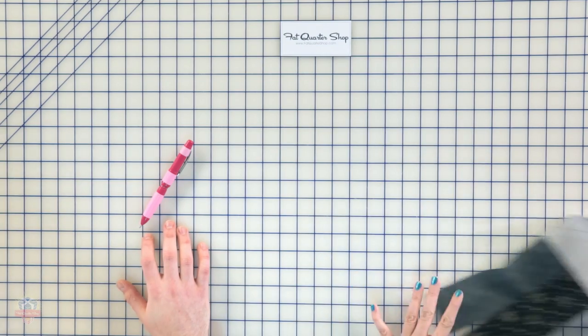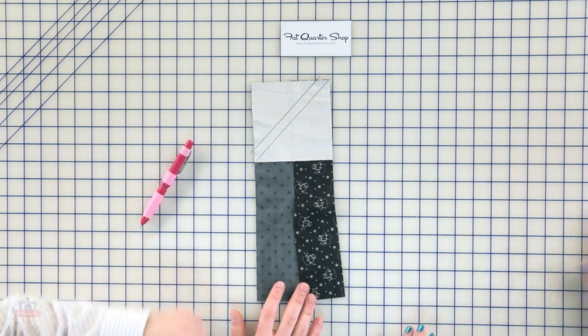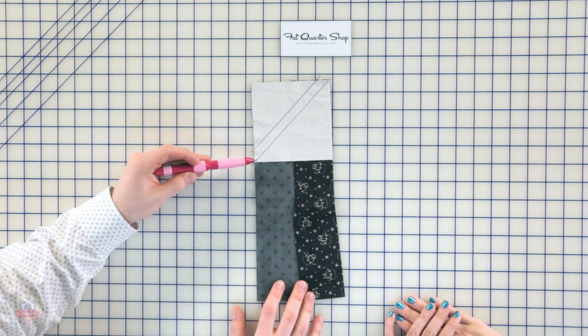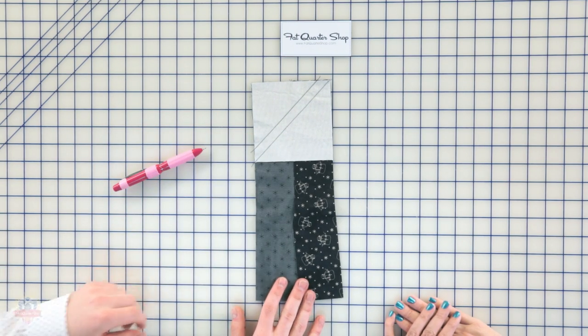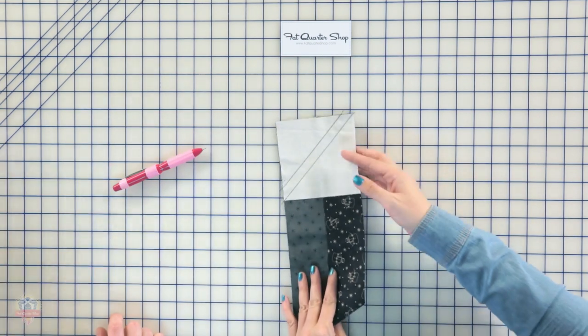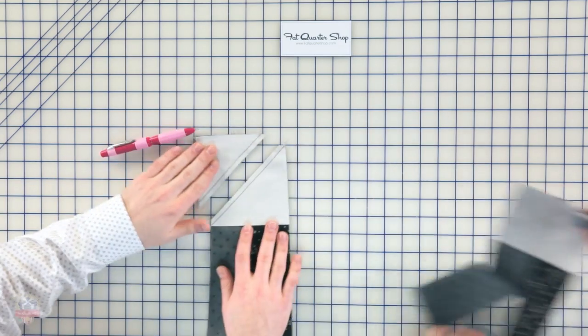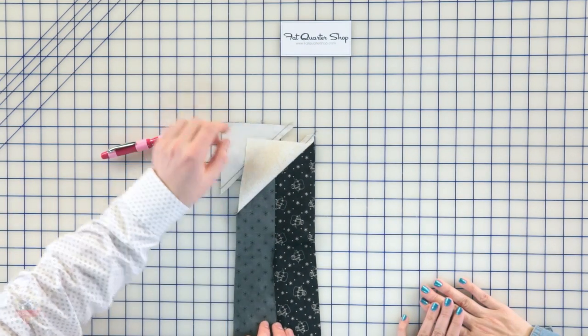Here's how it looks after it's sewn. We sewed it just in black. You're gonna want to use an ivory or a neutral color, but just black today so you can see it. Then you're gonna cut down the middle between those two stitching lines and you're gonna have your unit.